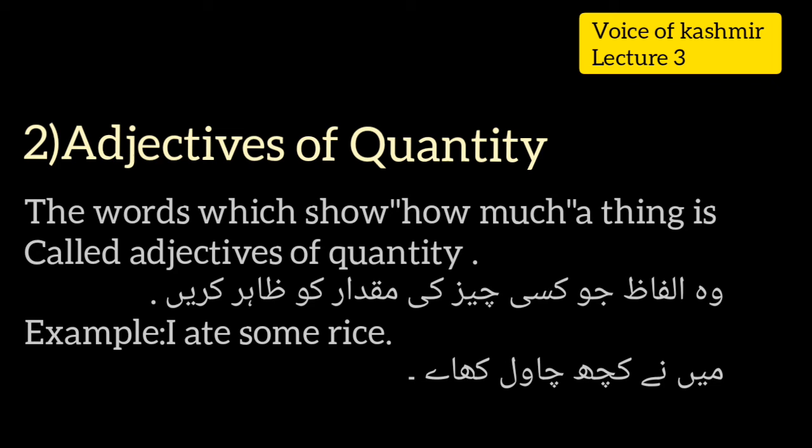اردو میں انہیں مقداری اسمی صفت کہا جاتا ہے — وہ الفاظ جو کسی چیز کی مقدار کو ظاہر کرتے ہیں۔ adjectives کی ان دونوں قسموں میں صرف یہی فرق ہے کہ quality میں ہم کسی بھی چیز یا شخص کی خصوصیت کو، جبکہ quantity میں ہم اس کی مقدار کو بیان کرتے ہیں۔ جیسے: 'اس نے کچھ چاول کھائے'، 'میں نے کچھ دودھ پیا'، 'اس نے کوئی کھانا نہیں کھایا'۔